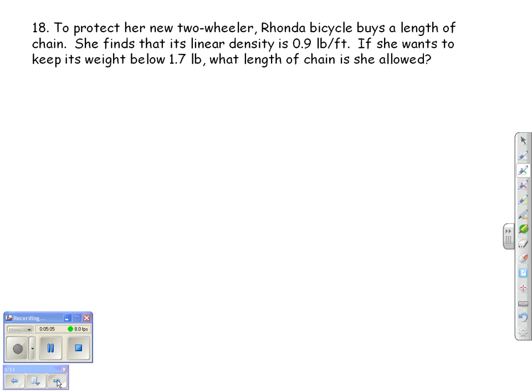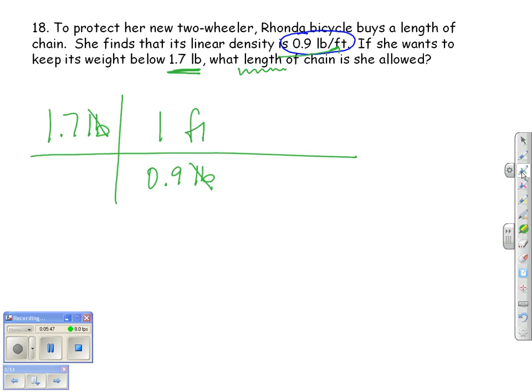Going on to protect her two-wheeler, Rhonda is going to buy a length of chain, and she finds that its linear density is, so here is our ratio that we have. If she wants to keep its weight below 1.7 pounds, what length of chain does she want? So we want to find feet. We're starting out with 1.7 pounds, because we don't want anything higher than that. Well, we know that for every 0.9 pounds, which I'm going to put on the bottom so I can cancel this out, top and bottom, she has one foot. So we're now in our length measurement. We've canceled out our pounds, and all we have to do is the math here. So, for number 18, our answer should be 1.89 feet.